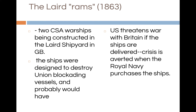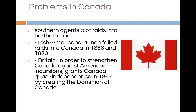In 1863, two Confederate warships were being constructed in the British shipyard of John Laird and Sons. Their large iron rams would have destroyed the Union blockade. To avoid infuriating the North, the London government bought the ships for the Royal Navy. The British also established the Dominion of Canada in 1867, partly designed to strengthen the Canadians against the possible vengeance of the United States.